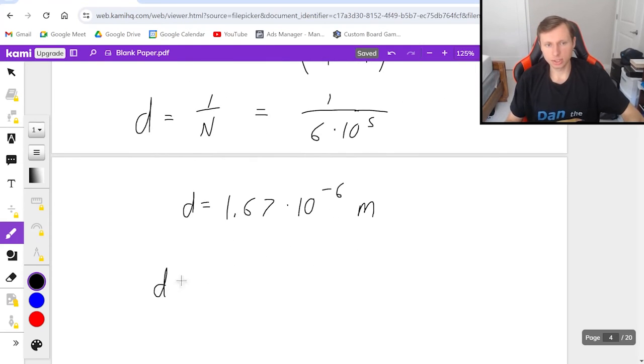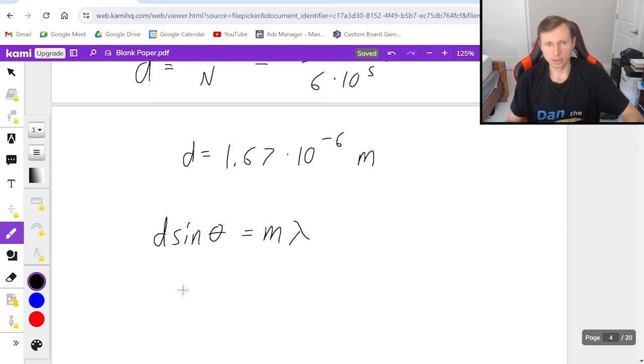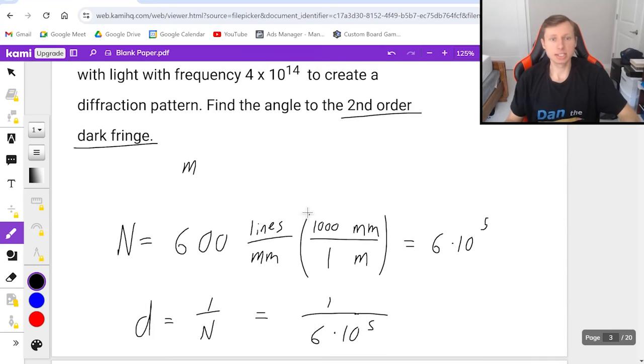And then finally, I can plug into d sine theta equals m lambda, where d is 1.67 times 10 to the minus sixth. Sine theta is what I'm solving for, m. So it's the second order dark fringe. So remember, the dark fringes are all the 0.5 values, like this.